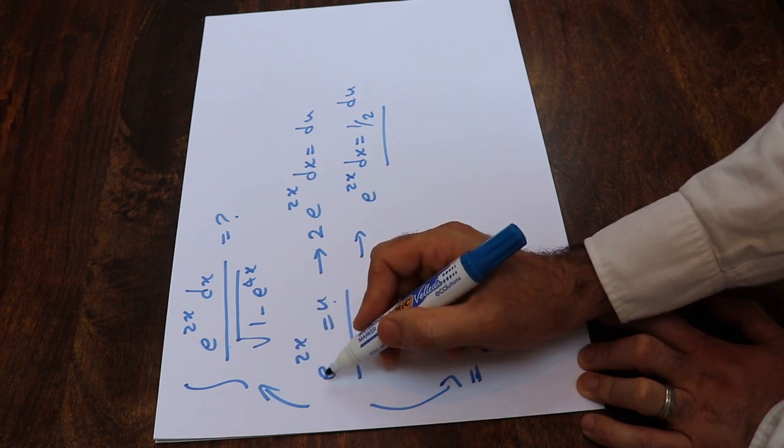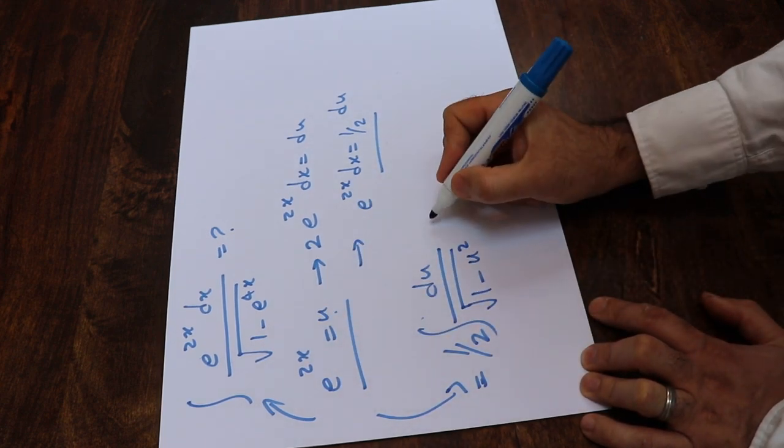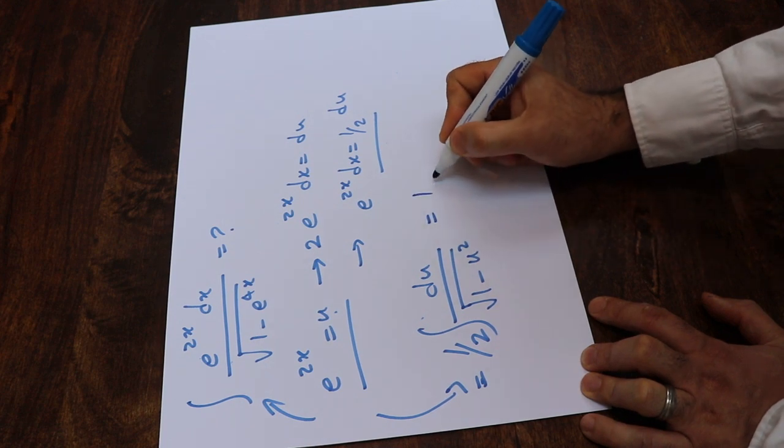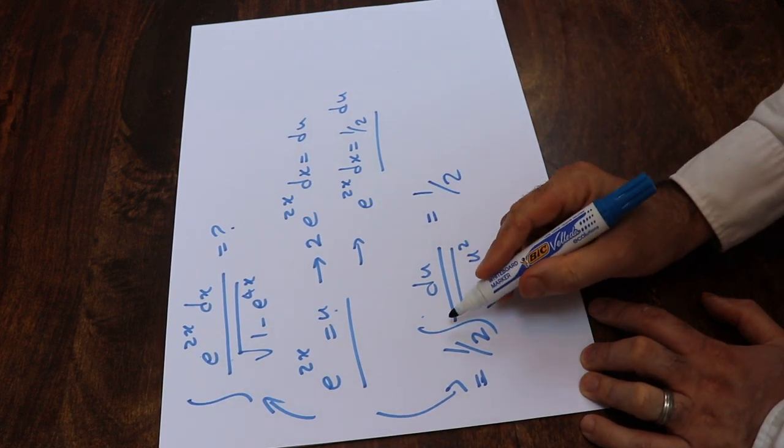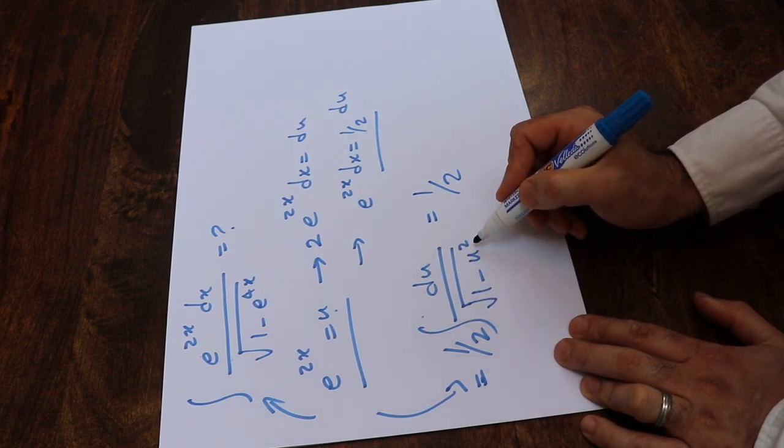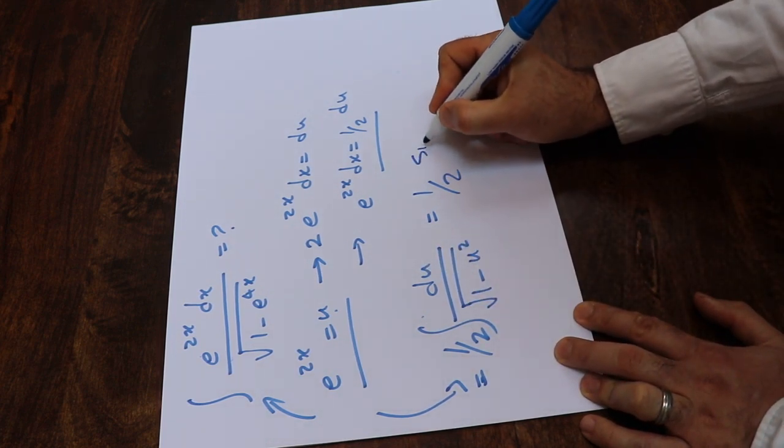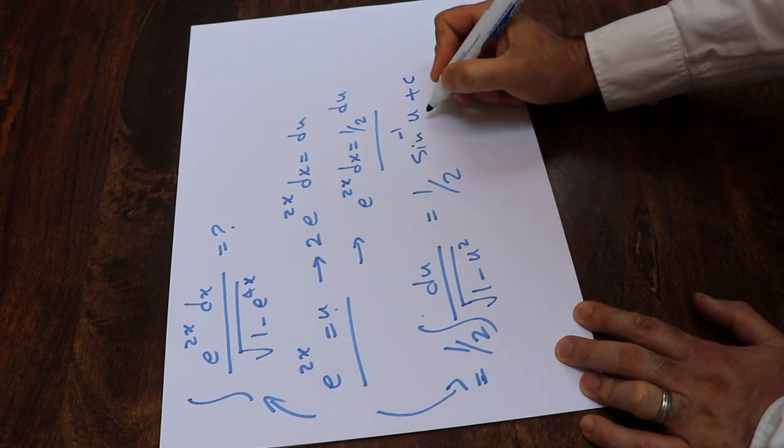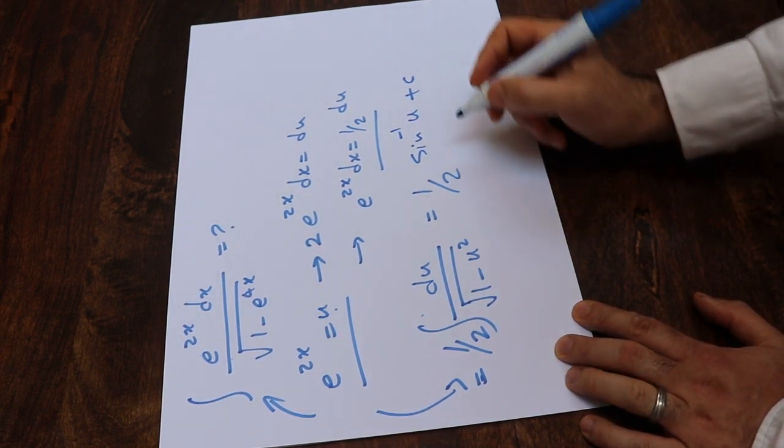Therefore, e^(4x) will be equal to u squared. And this one will be equal to 1/2. From table of integrals, we know that the integral of du divided by the square root of 1 minus u squared is equal to sin^(-1)(u) plus c, the constant of integration.